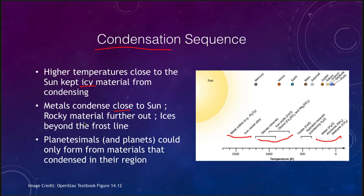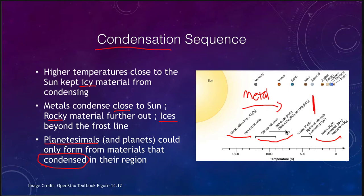Metals condensed closest to the Sun, rocky materials a little further out, and out beyond the frost line — somewhere between Mars and Jupiter — you were able to get ices that were able to condense. The key is that planetesimals and therefore planets could only form from the materials that actually condensed in their region. Close to Mercury, all we had was metallic materials and a little bit of rock, so Mercury is primarily metals. Further out, you add rocky material, so planets like Venus, Earth, and Mars have some metal but also significant amounts of rocky material. When you get to the outer planets, you get metals, rocks, and in addition ices, helping to build those planets as well.